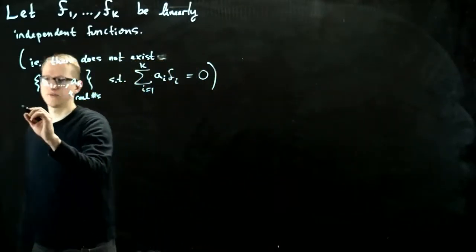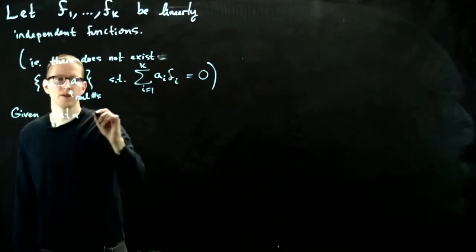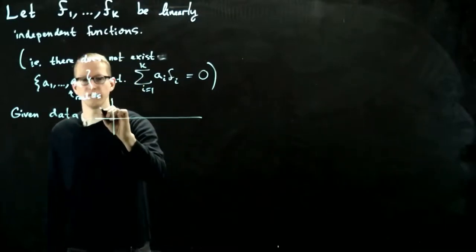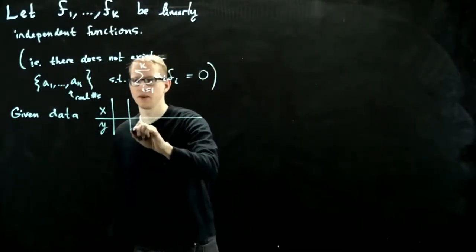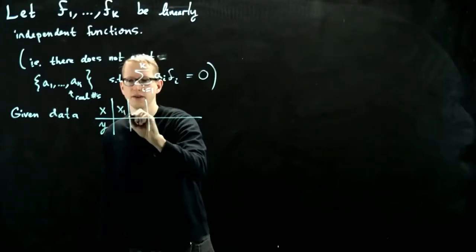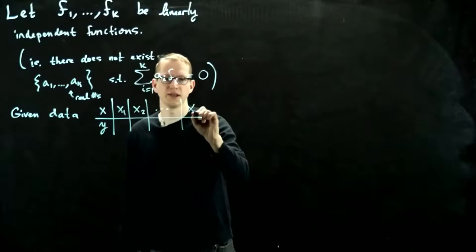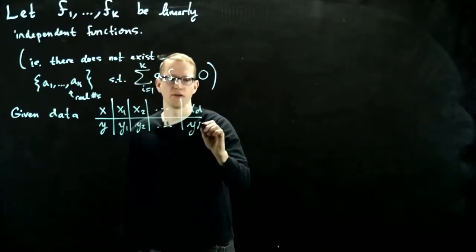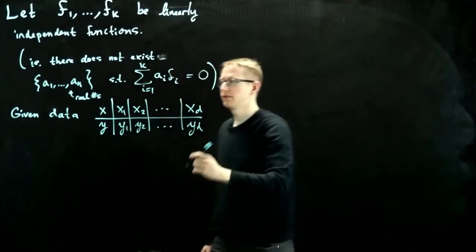Imagine you're given data points. The given data points, again we're going to use our x and y variables, so your input is x and your output is y, and you have a whole list of data, x1, x2, up to xd, where d is the number of data points.